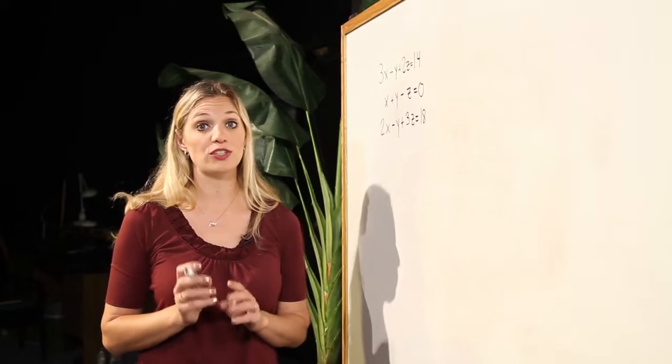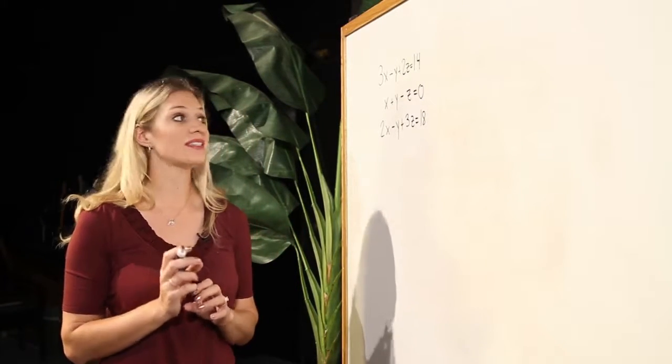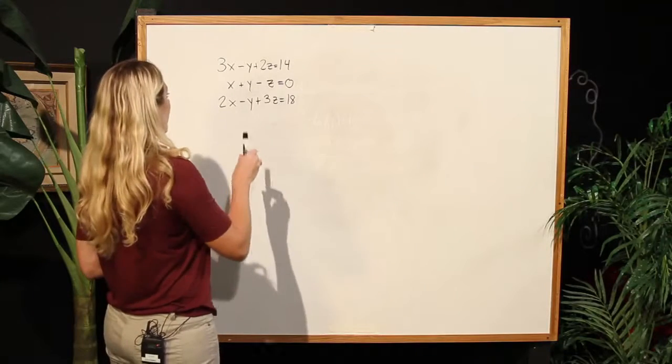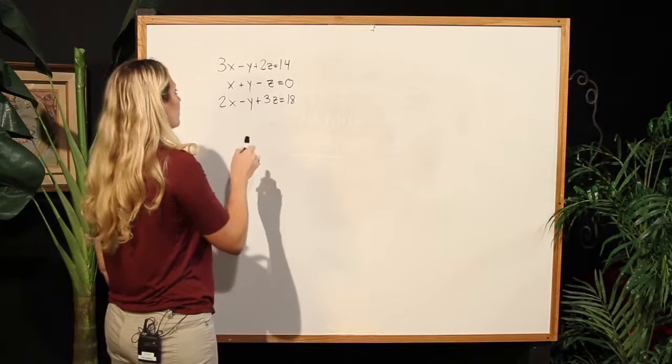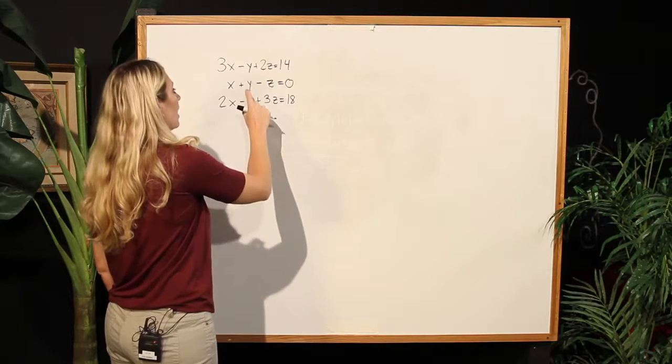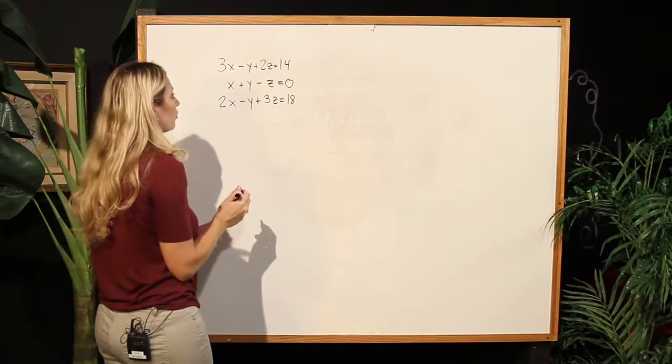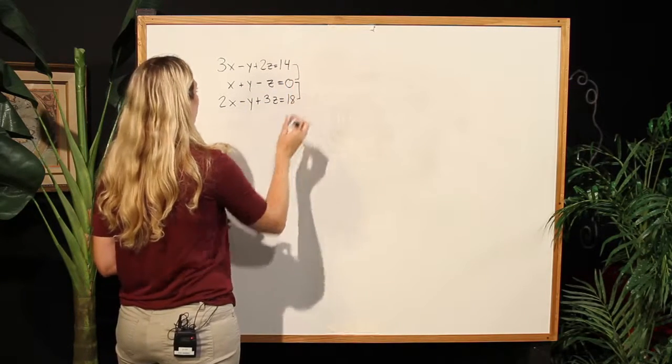Our first step is going to be to determine a variable to eliminate from two sets. We'll notice that y's have like coefficients but opposite signs if I look at the first and second equation, as well as the second and third equation. So let's go ahead and choose those two pairings.